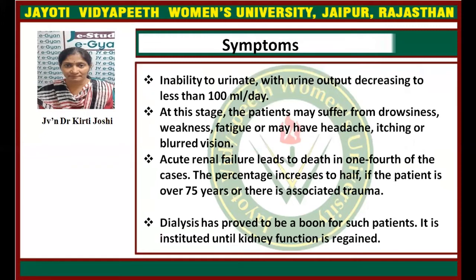Symptoms include inability to urinate, with urine output decreasing to less than 100 ml per day. At this stage, the patient may suffer from drowsiness, weakness, fatigue, or may have had eating difficulties or blurred vision. Acute renal failure leads to death in one-fourth of cases. The percentage increases to half if the patient is over 75 years or there is associated trauma.